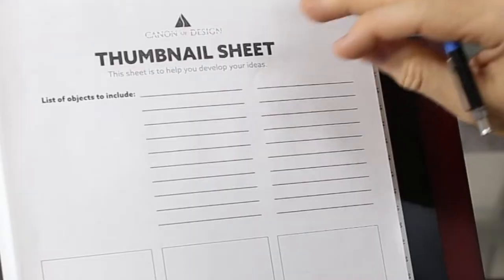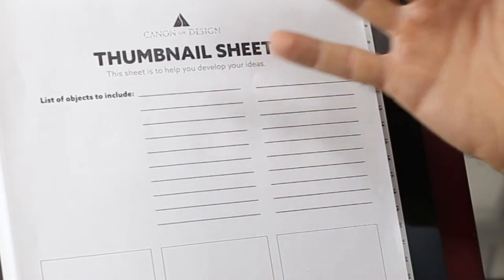One thing I do before I start the thumbnail is actually just write out a list of all the objects I want to include in the composition. This way I don't leave anything out, but you always want to make sure you have that main subject in mind because that's what the design is going to be developed around.